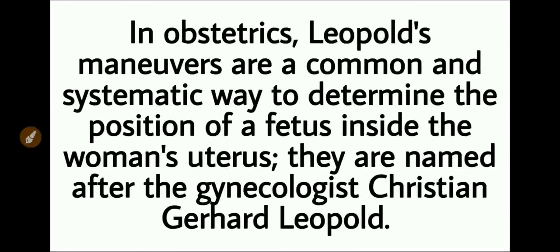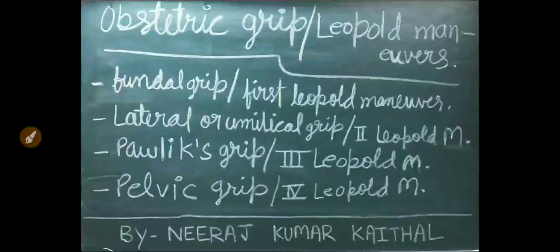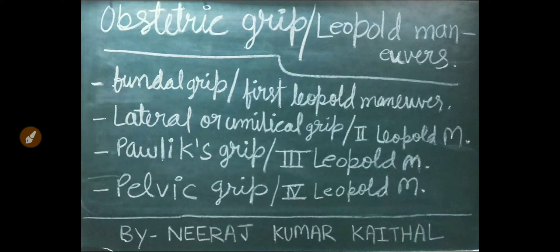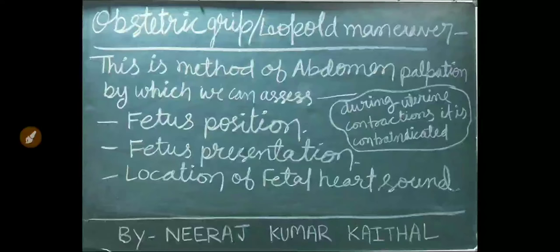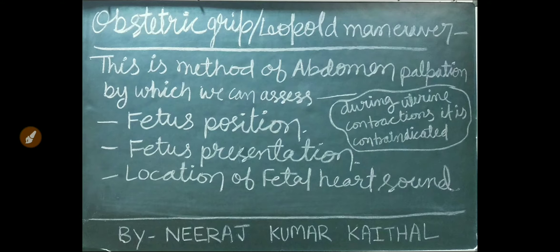In obstetrics, Leopold's manoeuvres are a common and systematic way to determine the position of the fetus inside the woman's uterus. They are named after the gynaecologist Christian Gerhard Leopold. There are four types: first is fundal grip, also known as the first Leopold's manoeuvre; second is lateral or umbilical grip; third is pelvic grip or third Leopold's manoeuvre; and fourth is pelvic grip or fourth Leopold's manoeuvre. Leopold's manoeuvres are a method of abdominal palpation by which we can assess fetal position, fetal presentation, and location of fetal heart sound.